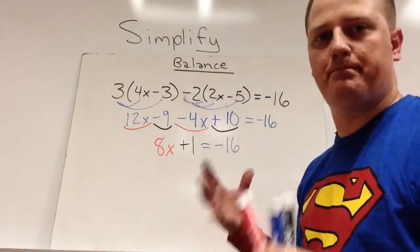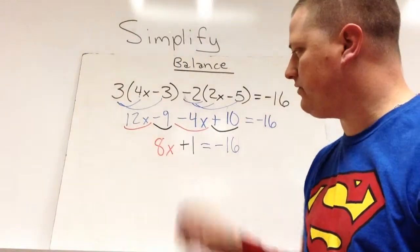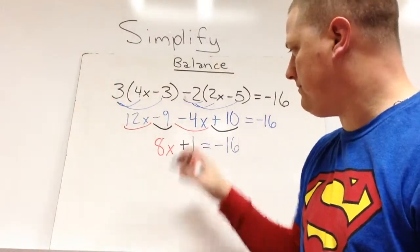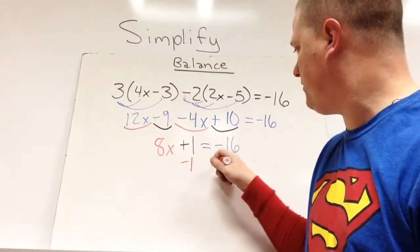So now we just balance method this. Last thing we do is minus 1, or plus 1, so I'm going to minus 1 on both sides.